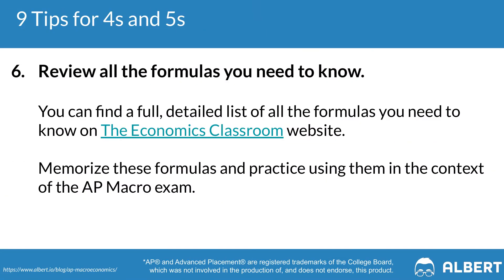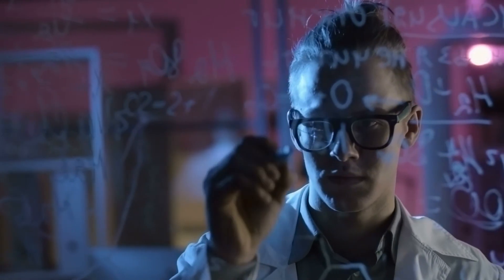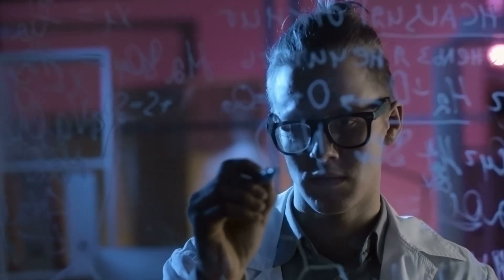If you need a helpful video covering the 10 most important AP macroeconomics graphs, there's a great video by a fellow YouTuber linked in the accompanying blog article below. Tip number six is to know all the key formulas — including how to calculate real GDP, the unemployment rate, the tax multiplier, and the GDP deflator. A complete breakdown of all required formulas is also linked in the video description via the Economics Classroom.